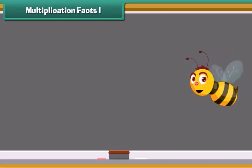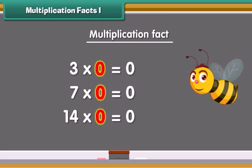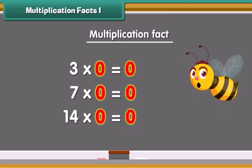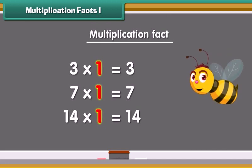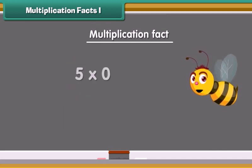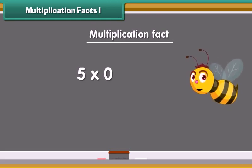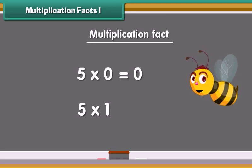We start with some multiplication facts. Any number multiplied by 0 is always equals to 0. A number multiplied by 1 is equal to the same number. Example: 5 multiplied by 0 is 0, 5 multiplied by 1 is 5.